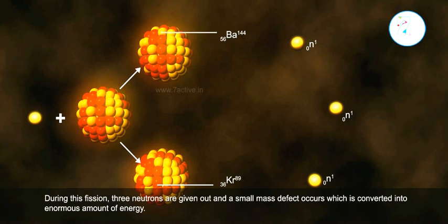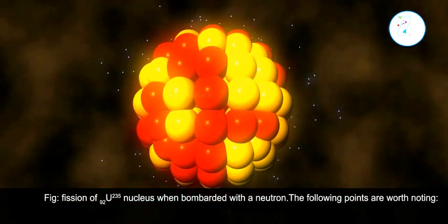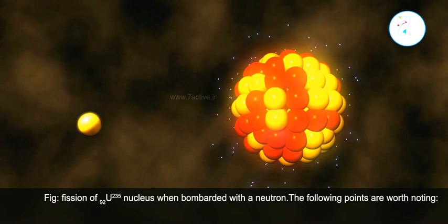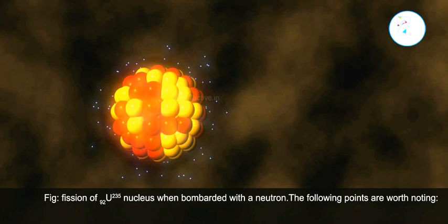During this fission, three neutrons are given out and a small mass defect occurs, which is converted into an enormous amount of energy. Figure: fission of 92U235 nucleus when bombarded with a neutron.